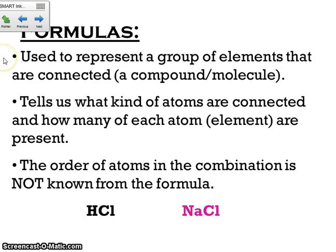A formula is what we use to show that a couple of atoms have been bonded together — a group of elements that are connected or bonded. The formula tells us what kind of atoms are in there and how many of each are present. What it doesn't tell us is what order those atoms come in.